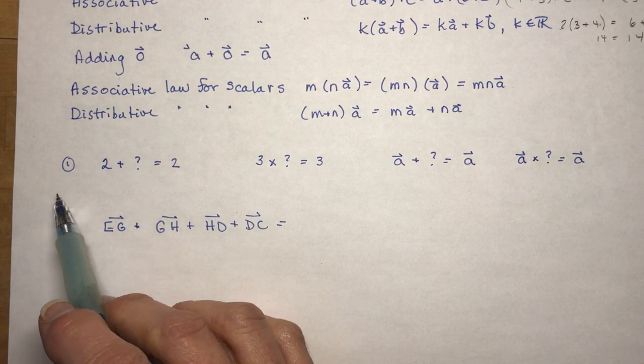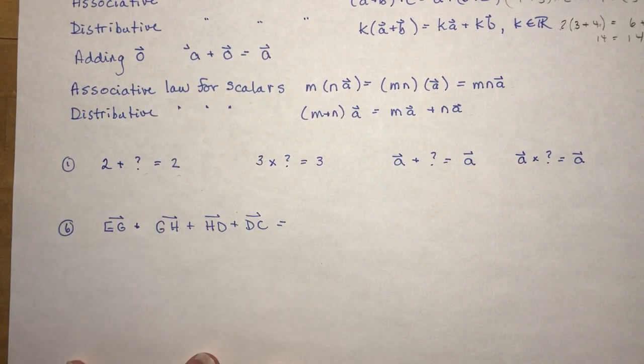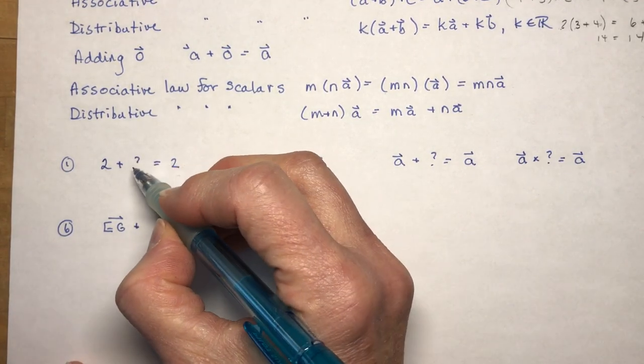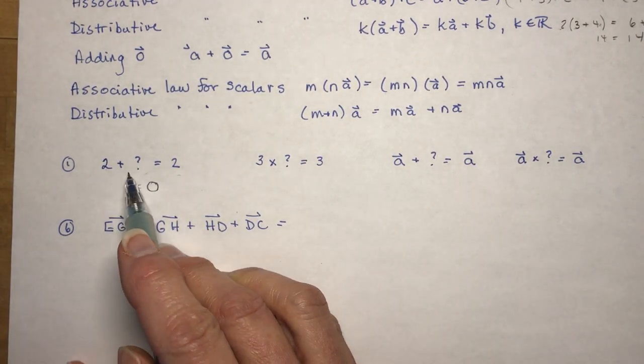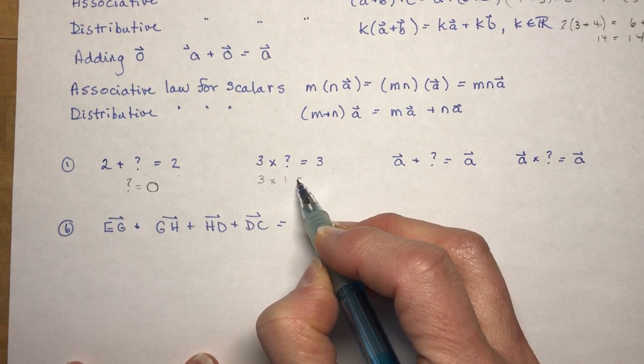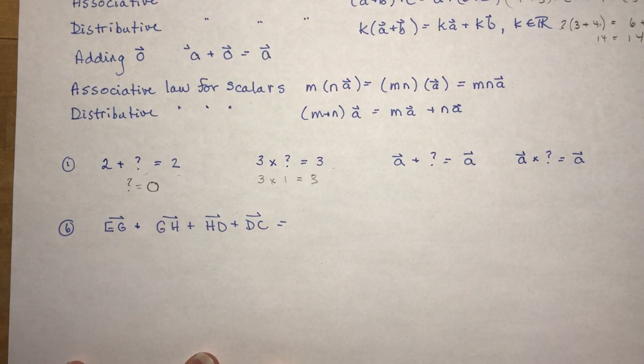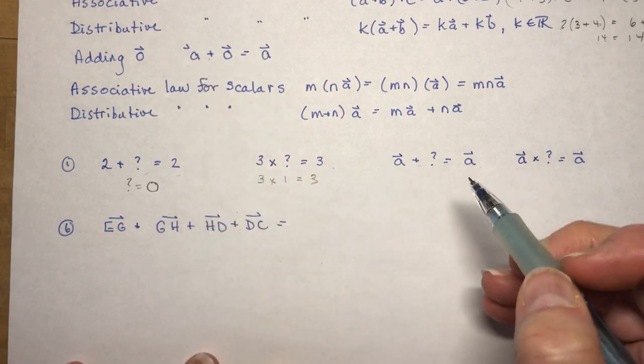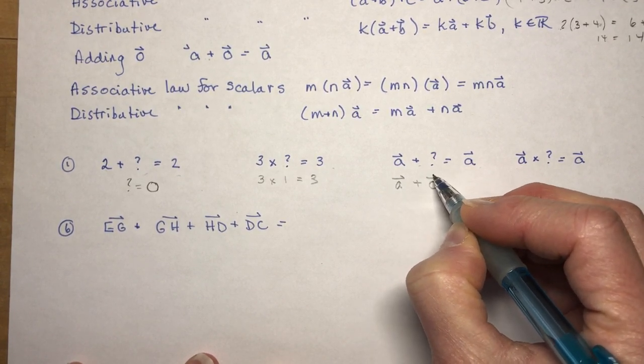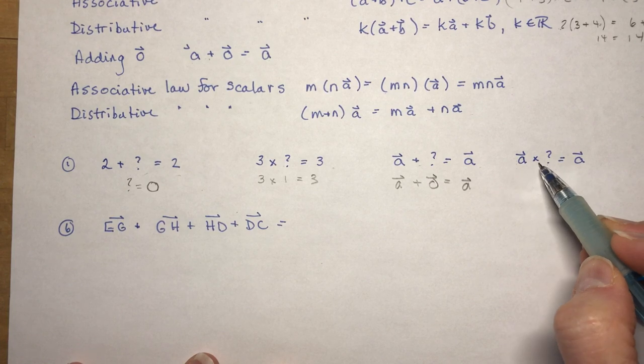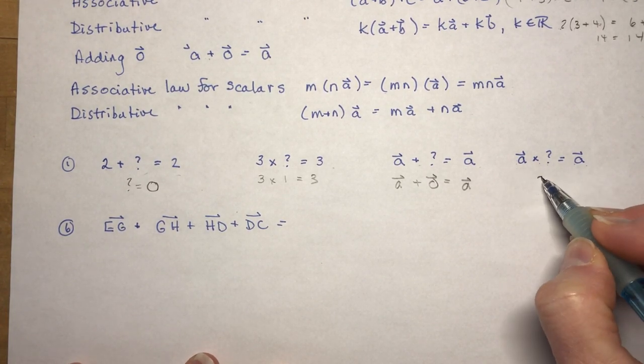The first question from the homework says: what is the identity element for the addition of numbers? 2 plus what gives me 2? Obviously 0, because 2 plus 0 is 2. What do I multiply 3 by to get 3? With numbers it's 1. What if I had vector a though and I wanted to add something to get vector a? You're not going to add 0. You add the vector 0 to get vector a. What scalar would I multiply it by to still have vector a? That's just 1. 1 times vector a. Easy.